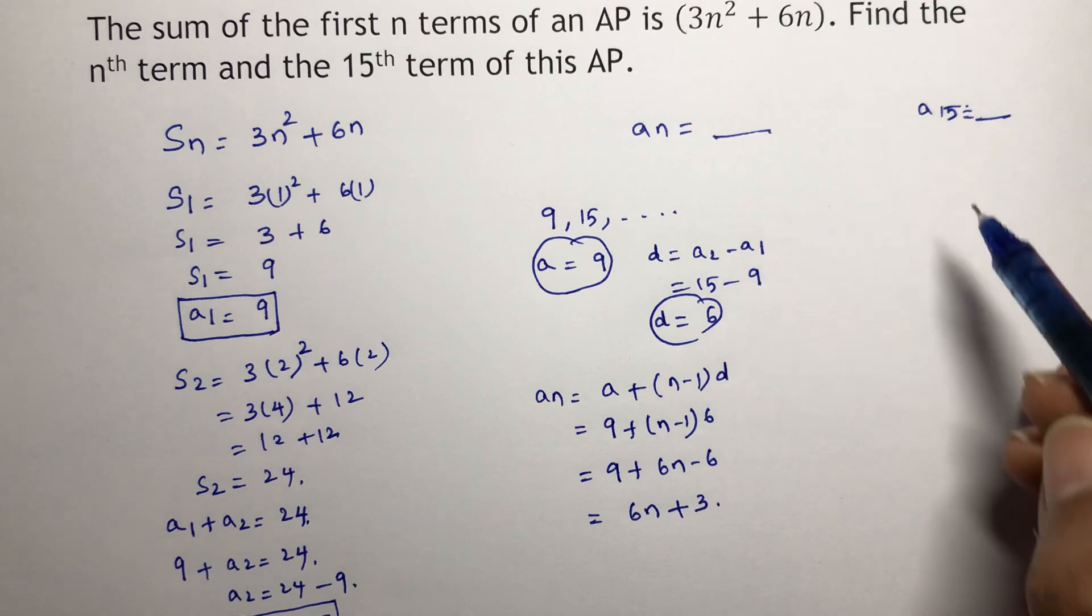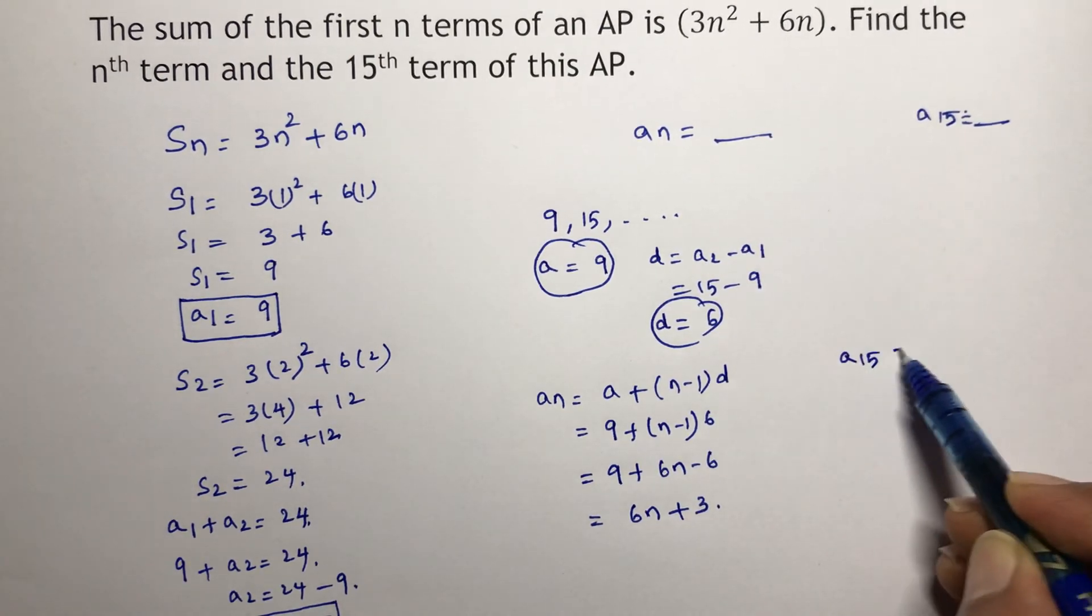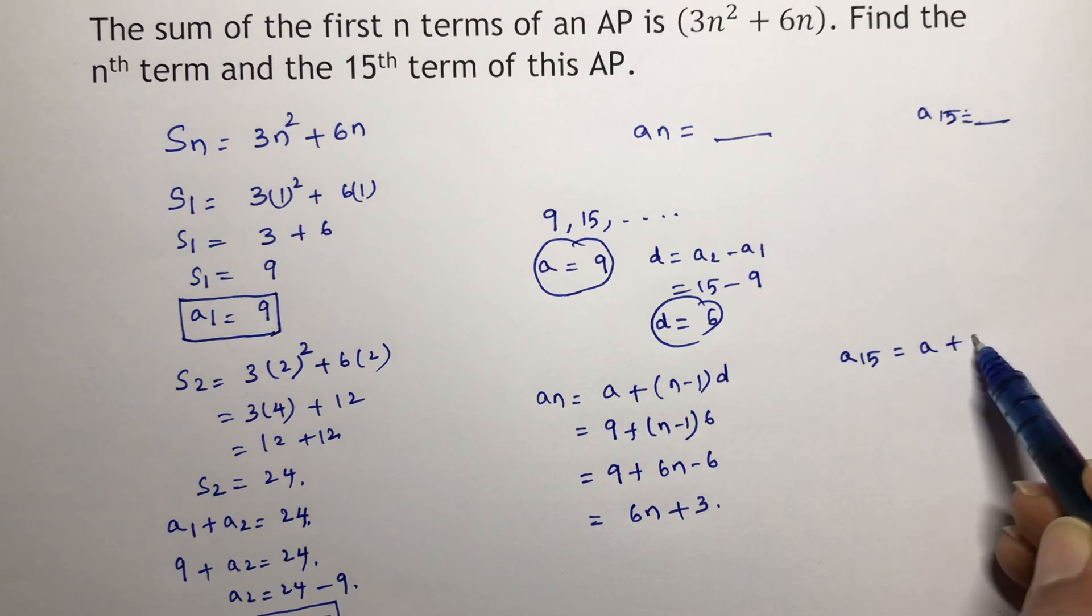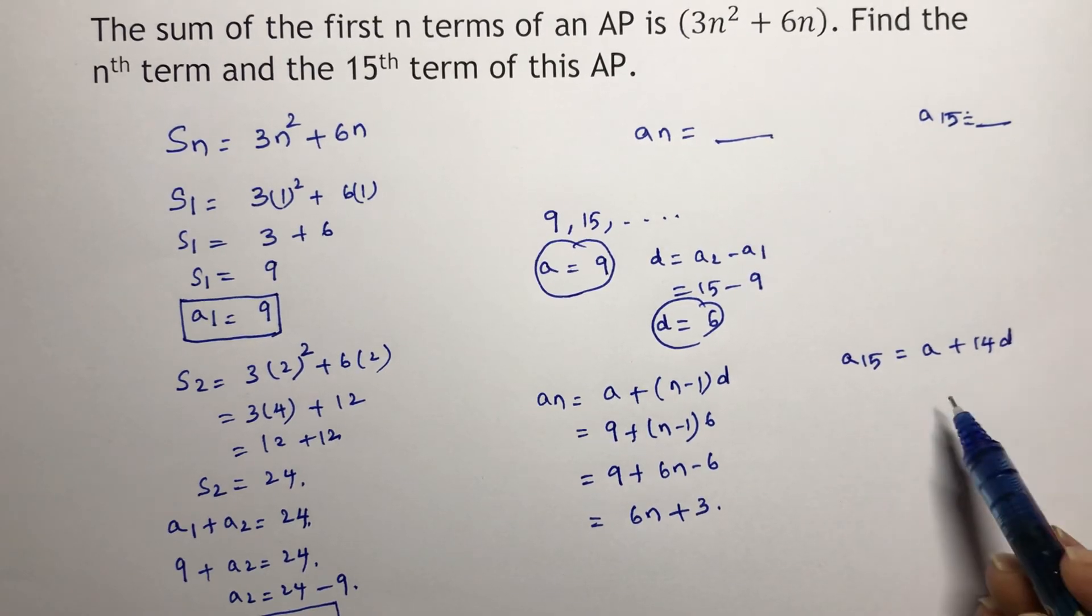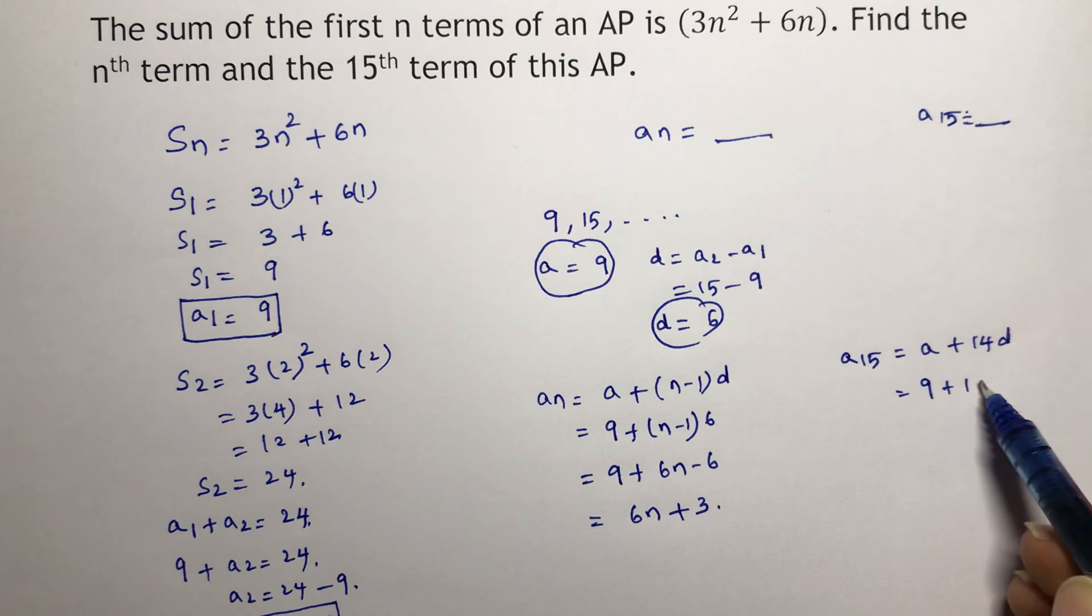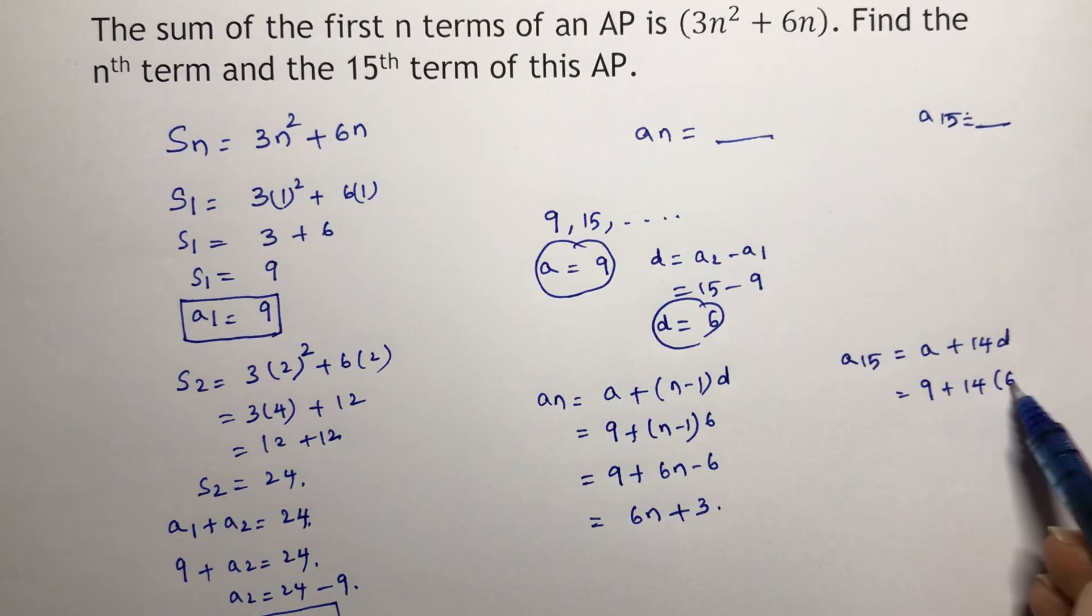So 6n plus 3. In the same way, you need to calculate the 15th term also. The 15th term is A + 14d. So A is 9 plus 14 into 6.